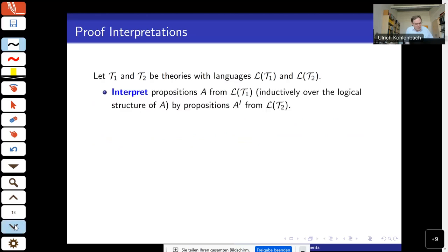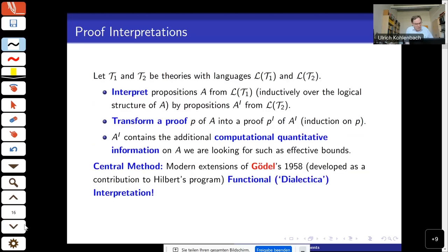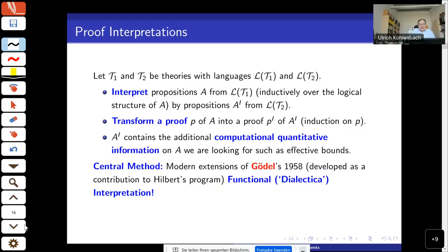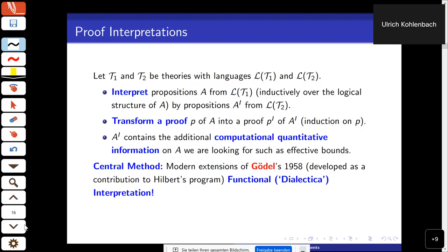The main proof-theoretic tools used here are not cut elimination, normalization, or epsilon substitution, which perform a global rebuilding of the original proof and cause non-elementary increase in proof size. Rather, we use proof interpretations which give a trivial interpretation to the modus ponens steps, meaning the original structure of the proof remains largely intact.